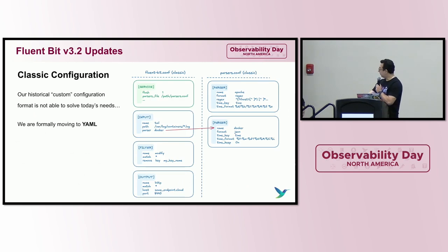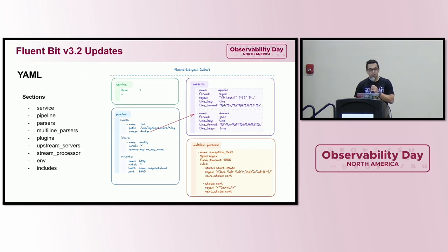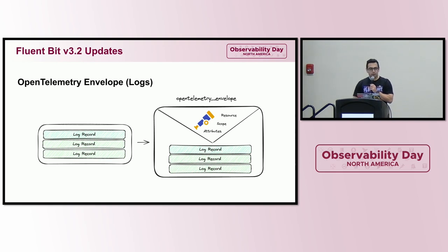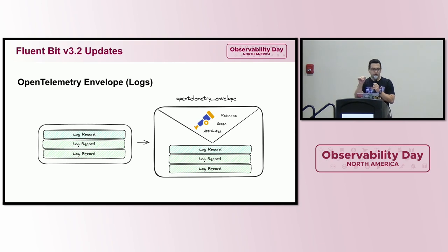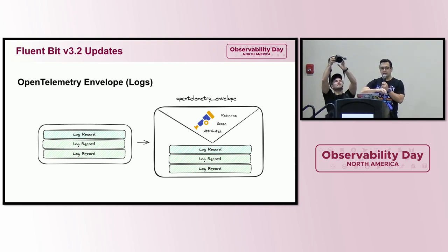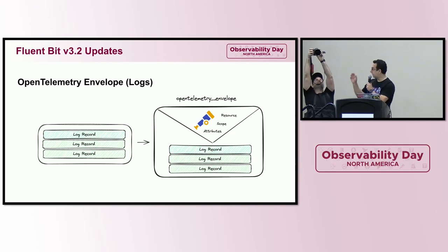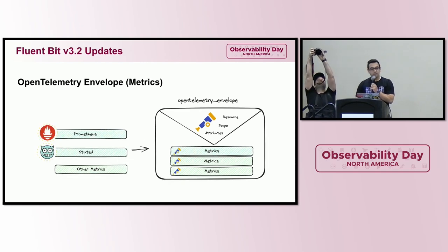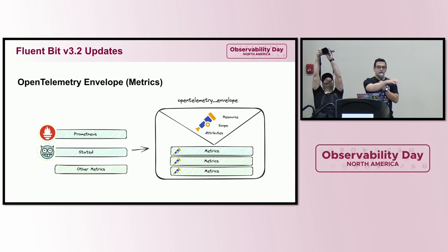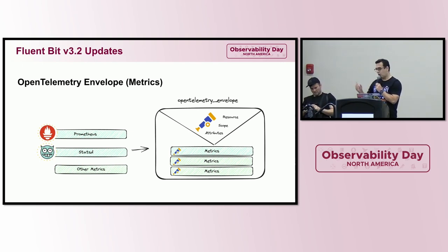From a configuration perspective, we implemented full YAML support. This is the classic mode but in YAML, which allows you to have every type of section in one file or include other YAML files — so now you can leverage all your tooling. From the OpenTelemetry support side, we launched early this year a way to convert non-native OpenTelemetry data into OpenTelemetry native data. If you are collecting syslog messages from a firewall, you can package that as OpenTelemetry data using the OpenTelemetry envelope processor. We also ship the same functionality for metrics — if you're collecting metrics from a Prometheus endpoint or receiving StatsD in FluentBit, you can package that as OpenTelemetry OTLP.